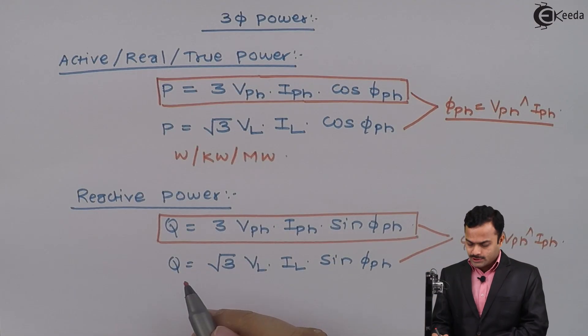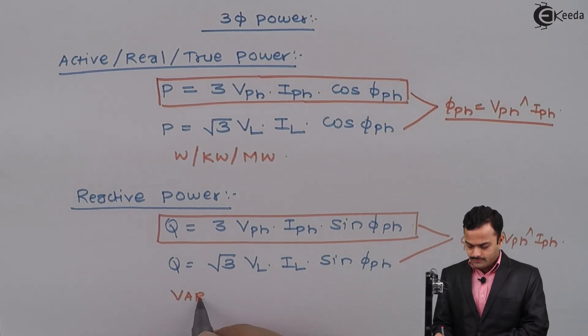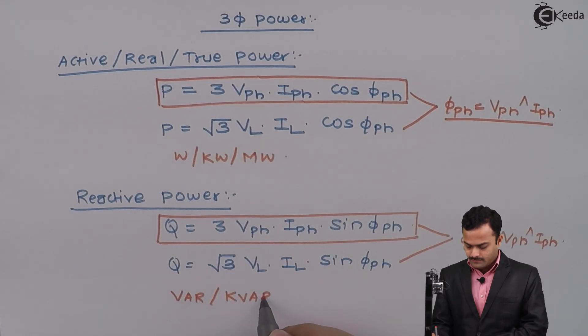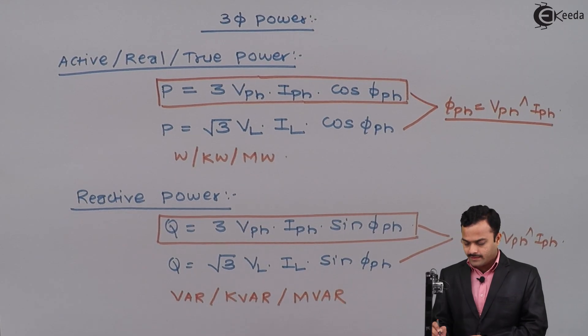Unit for reactive power is Volt Ampere reactive or Kilovolt Ampere reactive or higher unit you can consider Megavolt Ampere reactive.